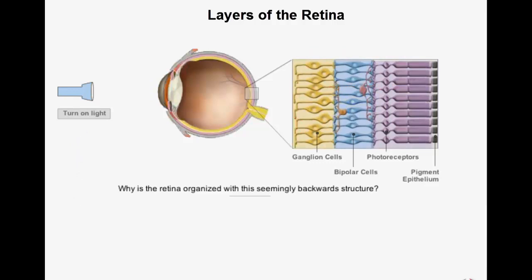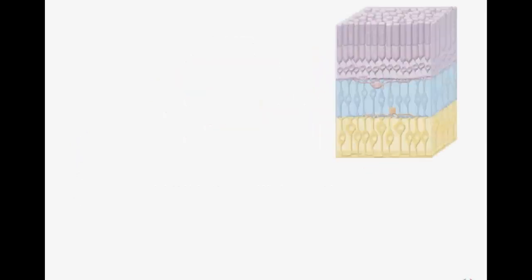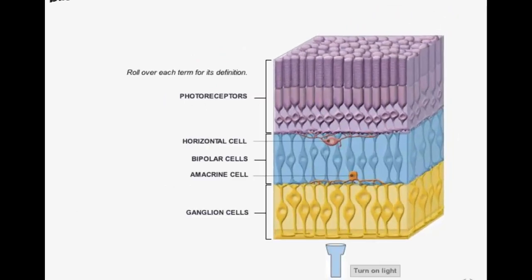Taking a closer look at the layers in the retina, we can see the following. Information about light striking the retina is transferred from the photoreceptors to the bipolar cells and then to the ganglion cells.